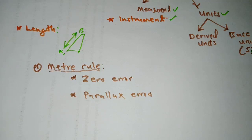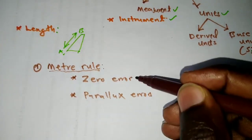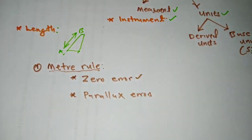The zero error usually occurs when your meter rule is not starting at zero, or when you don't count starting from zero when you're measuring the distance of an object. So you get this error.